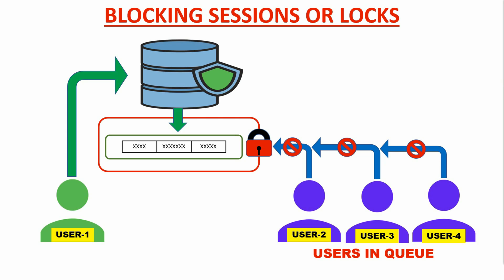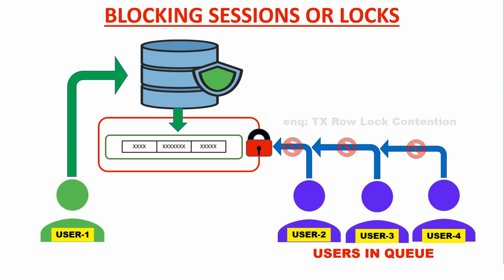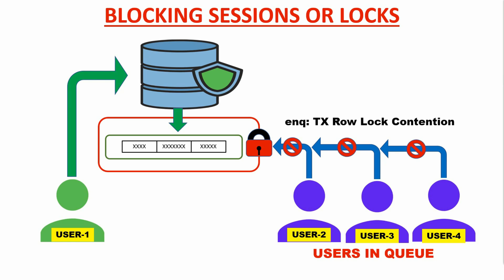So what is a blocking lock? We can take the same example to explain: if user 1 does not complete the transaction and continues to block the subsequent users in the queue from making any changes, then it is called a blocking lock. A blocking lock is usually a row lock contention in the database and represented with the wait event named ENQTX row lock contention.